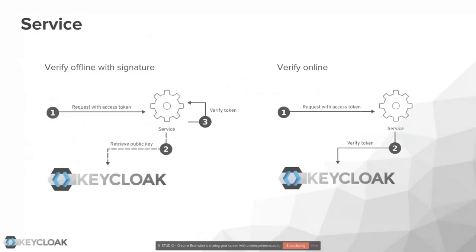On the server side, the access token is sent alongside the request, and the service uses it to verify whether the request should be permitted. There are two options: online verification, where the service calls the Keycloak server to check the token; or offline verification, where the service retrieves and caches the public key from Keycloak and validates the token signature locally, avoiding a round-trip to Keycloak on every request.